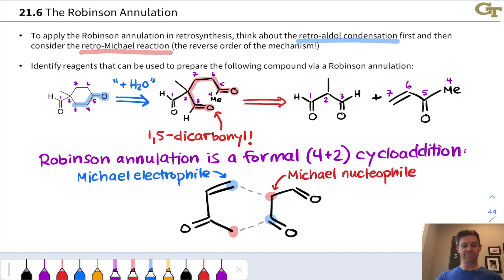At the bottom, in the aldol process, the reactants switch roles. The left molecule is the aldol nucleophile via an enolate that forms right there, and the right-hand molecule is the aldol electrophile via its carbonyl group right there.